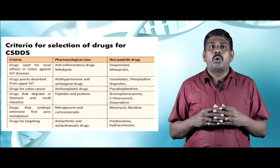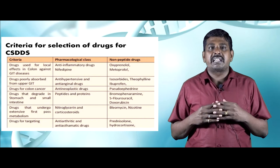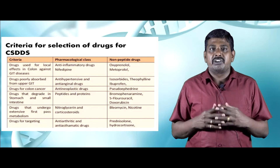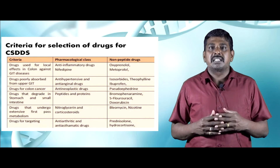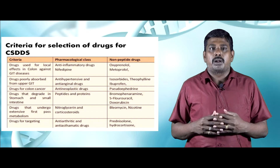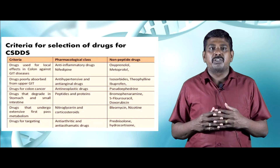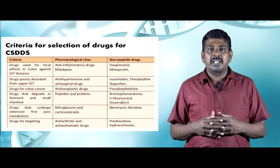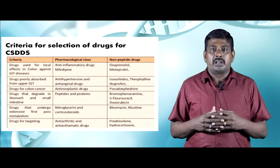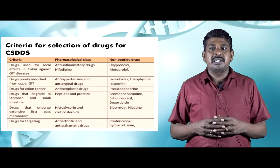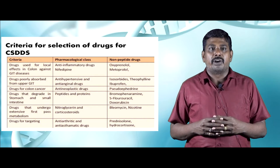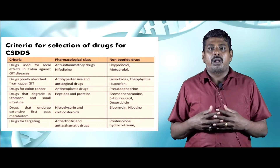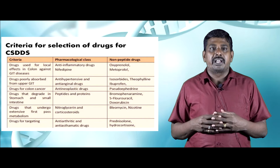Summarizing the criteria for drug selection: drugs used for local effects in the colon against gastrointestinal tract disease include anti-inflammatory agents such as nifedipine, non-peptide drugs oxyprinol and metoprolol. For drugs poorly absorbed from the upper gastrointestinal tract, the pharmacological classes include antihypertensive and anti-anginal drugs, with non-peptide examples including isosorbide, theophylline, and ibuprofen.